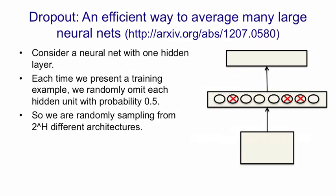What this means is we're randomly sampling from 2 to the H architectures, where H is the number of hidden units. It's a huge number of architectures. Of course, all of these architectures share weights. That is, whenever we use a hidden unit, it's got the same weights as it has in other architectures.